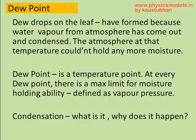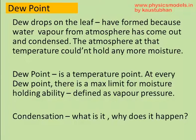The dew point is a temperature point, and at every temperature there is a maximum limit for the surrounding air to hold moisture. If the existing moisture in the air is more than what the air can hold, the extra moisture will come out and condense as water on leaves, grass, and other surfaces. This is the principle of condensation.